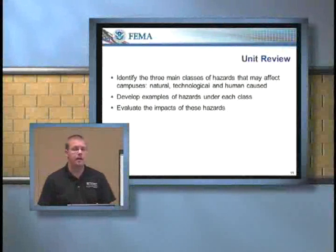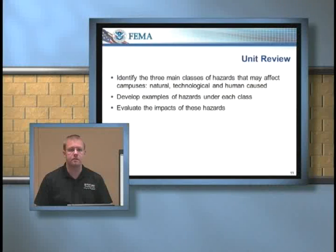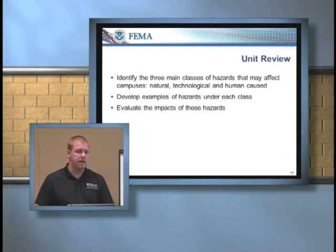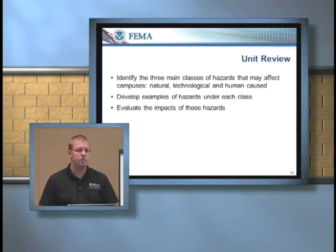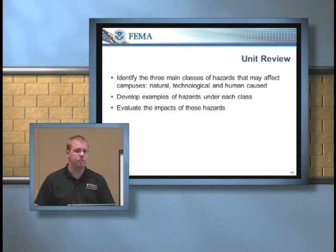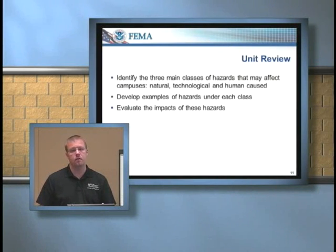So now we've identified our hazards and talked about direct and indirect impacts. Using that information, we can start plugging that into our risk assessment tool. That brings us to the end of the unit review. We talked about different hazard classes — natural disasters, human cause, and technological. We've also evaluated the impacts of those hazards with direct and indirect impacts. In the next unit, when we come back from break, we're going to talk about hazard vulnerability assessment — plugging that information into a tool that will give us a quantitative measure of what our hazards are, so we can then develop our emergency operations plan.